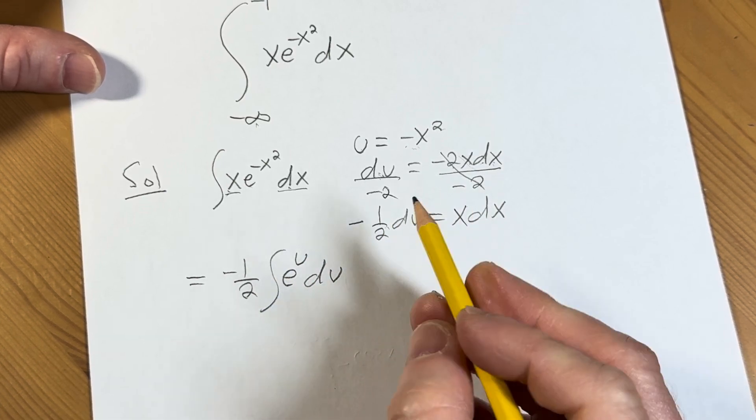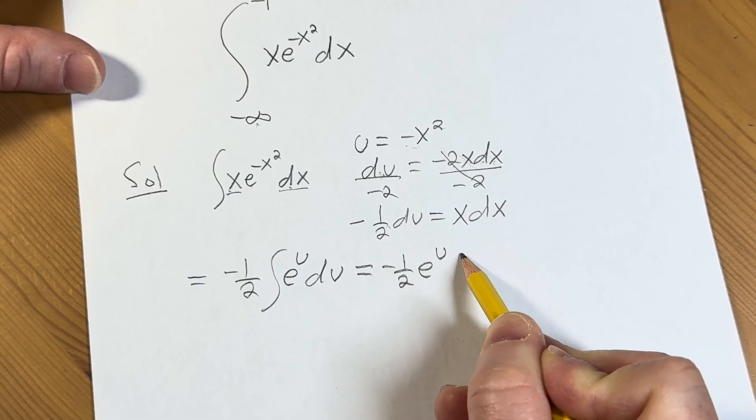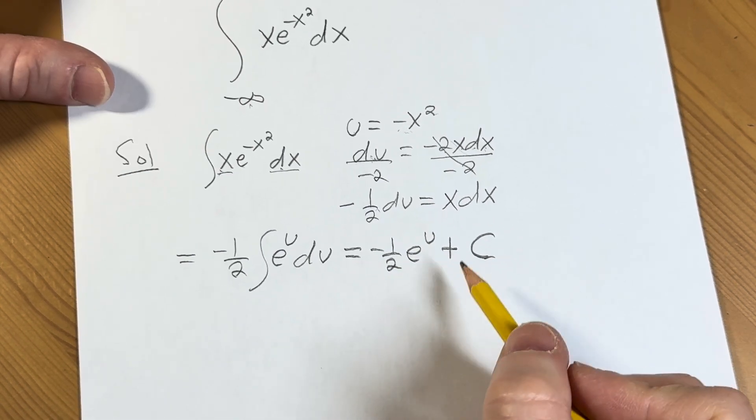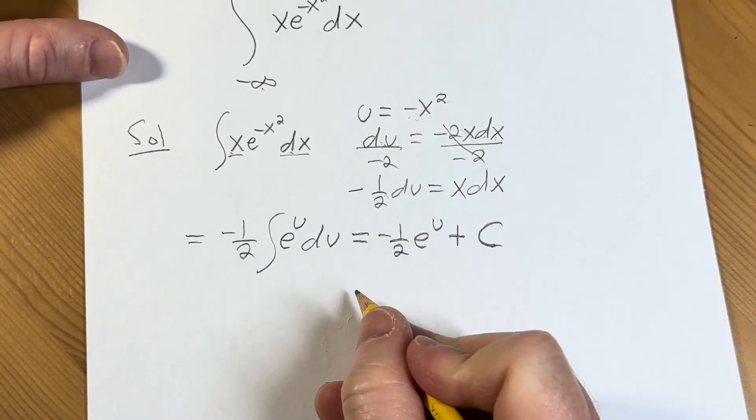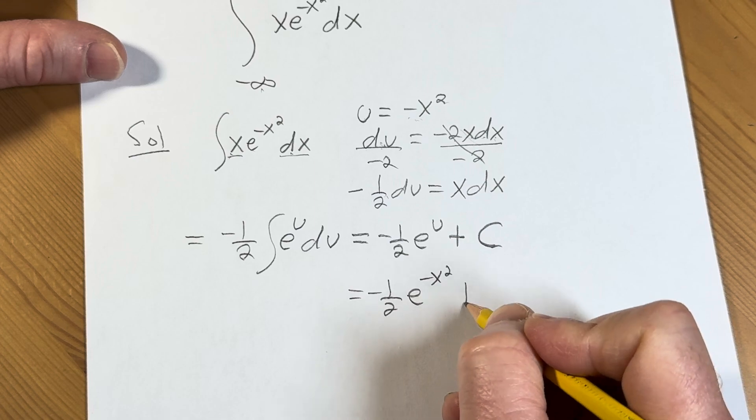The integral of e to the u is e to the u. So when you integrate this, you get negative 1 half e to the u plus C. Well, what is u? u is negative x squared. So this is equal to negative 1 half e to the negative x squared plus C.